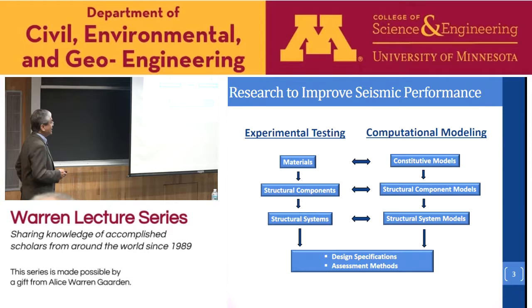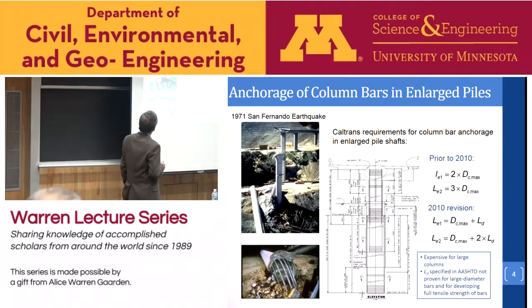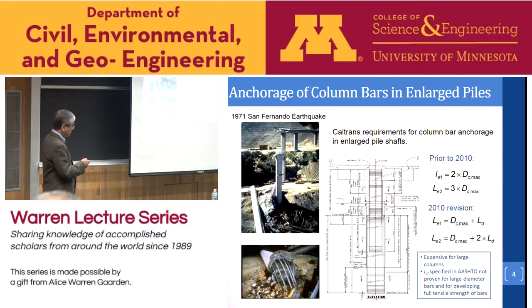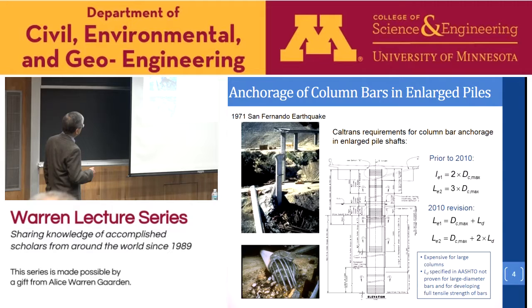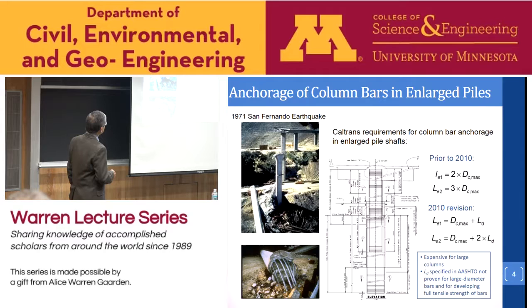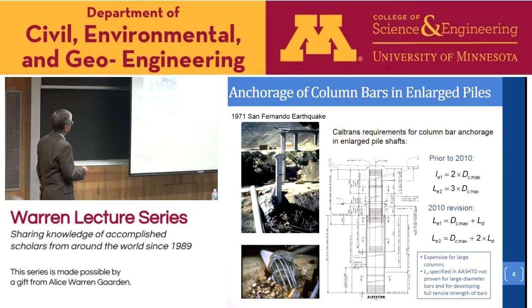Today I want to share some research projects involving both testing and modeling. One project is related to the anchorage of column bars in enlarged pile shafts — a very common construction type in California. We have a reinforced concrete column sitting on an enlarged shaft, called a Type II shaft. In the Caltrans specification, we want plastic deformation to be focused in the column elements rather than the superstructure, so an enlarged shaft allows us to localize damage at the base of the column rather than inside the shaft beneath the soil surface, making post-earthquake inspection and repair easier.